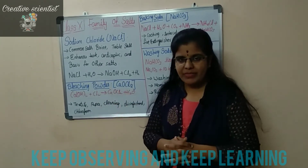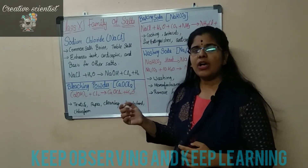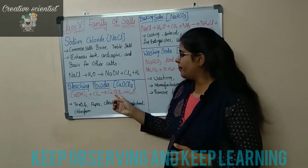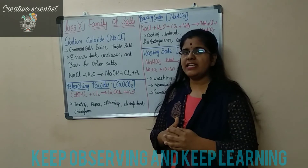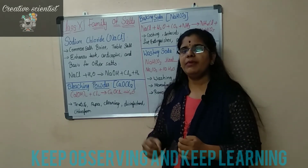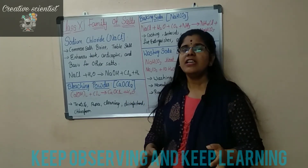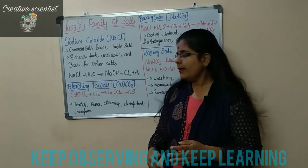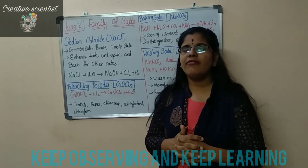One commonly used salt is bleaching powder, with chemical formula CaOCl2. It is formed when calcium hydroxide is subjected to the chlorine evolved from the brine solution, producing bleaching powder and water. The uses of bleaching powder include use in the textile industry and paper industry for whitening surfaces. It is also used for cleaning purposes such as washrooms and swimming pools, where it removes unpleasant smells. Additionally, it is used as a disinfectant and in the manufacturing of chloroform.